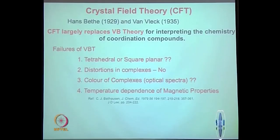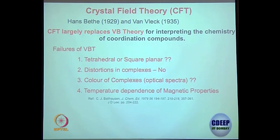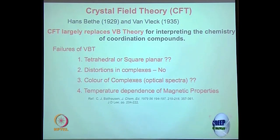There is a lot of information valence bond theory cannot provide — like why a specific compound is colored, or what happens to its magnetic properties. These are the things we are really interested in. This is where crystal field theory comes in. It is based on the failure of valence bond theory; where valence bond theory cannot explain further, crystal field theory picks up.